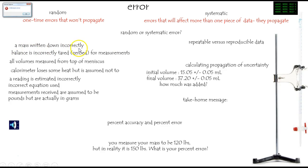You got a mass that you wrote down incorrectly. Well that's just a random error. Notice it said a mass. If it said every mass, well that might be a different situation. A balance is incorrectly tared for measurements with that plural there. That means every single one is going to be messed up. That's systematic.